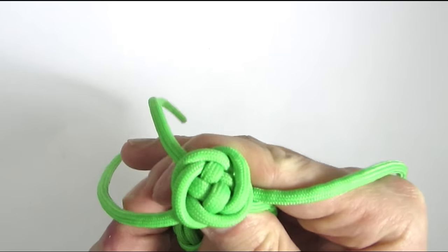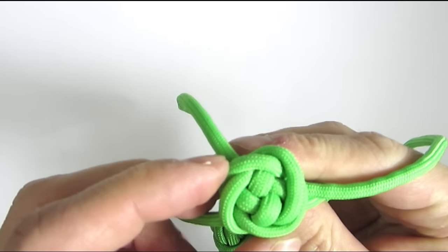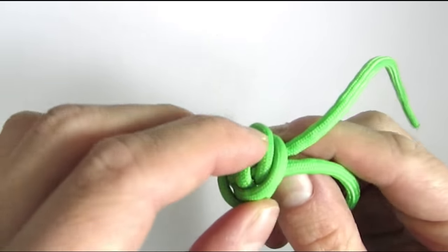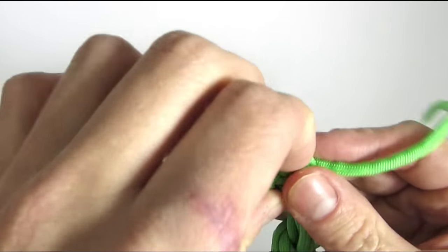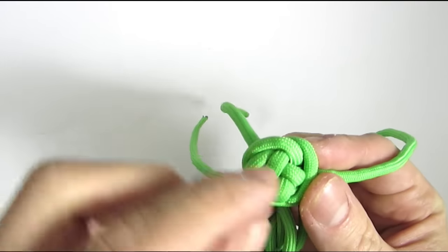And that's how you tighten up the blue rose knot. Make sure that your crown knot is always at the top of the knot, and slowly tighten up your Matthew Walker around it.